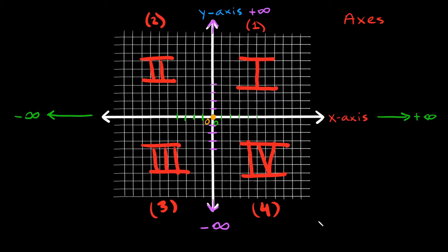The last thing I want to cover are ordered pairs. Ordered pairs give you the coordinates of a point. They're always written inside parentheses in the form x comma y. The first number tells you how many spots you move along the x-axis, and the second number tells you how many spots you move along the y-axis.